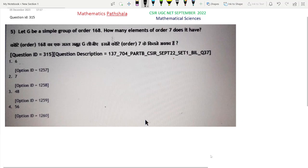Welcome everyone to our channel Mathematics Parshala. This is a problem from CSIR UGC NET September 2022 Mathematical Sciences. The question ID is 315. This is a problem of abstract algebra from part B.